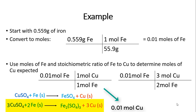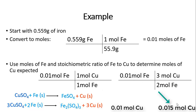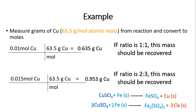Using the second mole-to-mole ratio, I start with moles of iron and put three moles of copper in the top — based on the stoichiometric coefficient of three for copper in the second reaction — and two moles of iron in the bottom to cancel. I end up with 0.015 moles of copper possible.